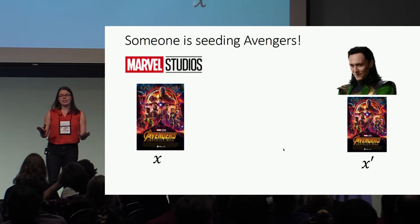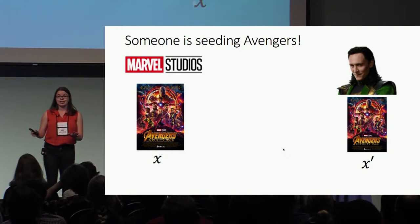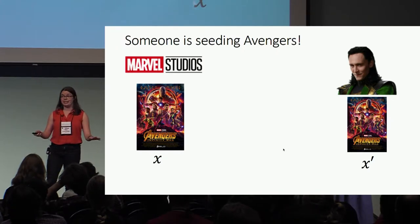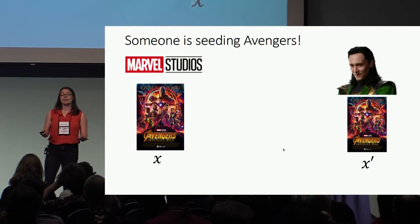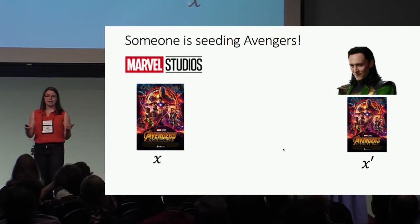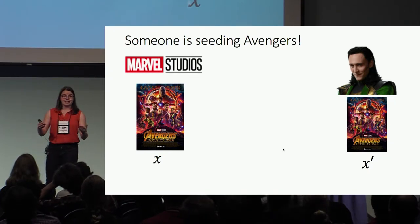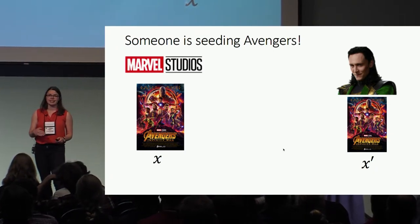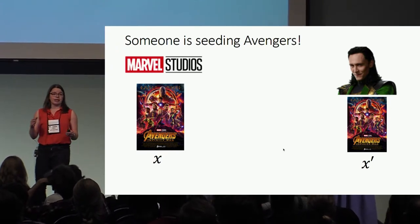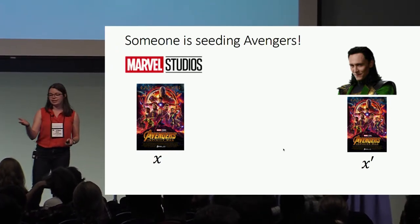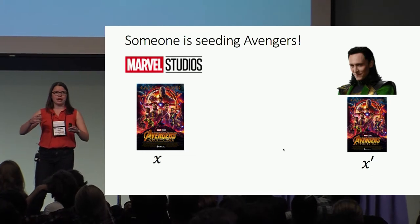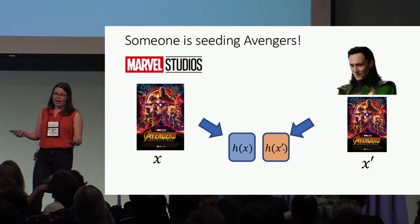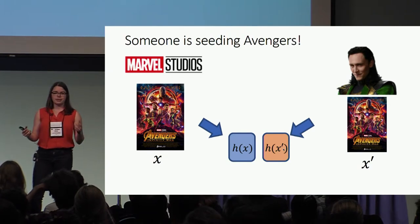Consider the following scenario. Someone is seeding the Avengers, which means they're putting it out on the internet and just letting people download this movie, which is very illegal, and Marvel Studios doesn't want this to happen. So Marvel Studios obviously has to check lots and lots of movies that people are posting online to see if they're actually posting the Avengers or doing something that's actually legal. Movies are big — they don't want to have to look at the whole file every time, so instead they'll want to just compare hashed values of the movie.